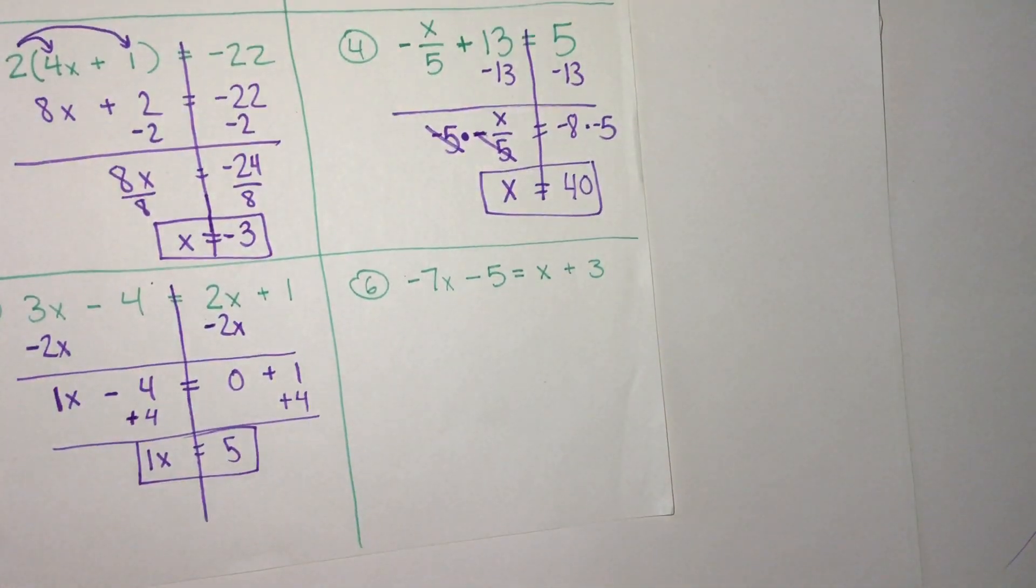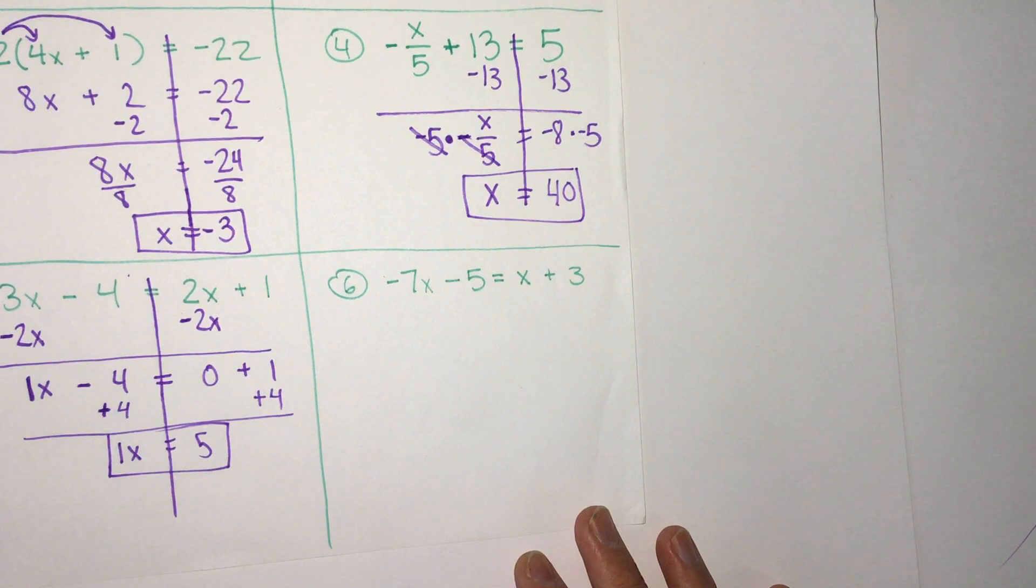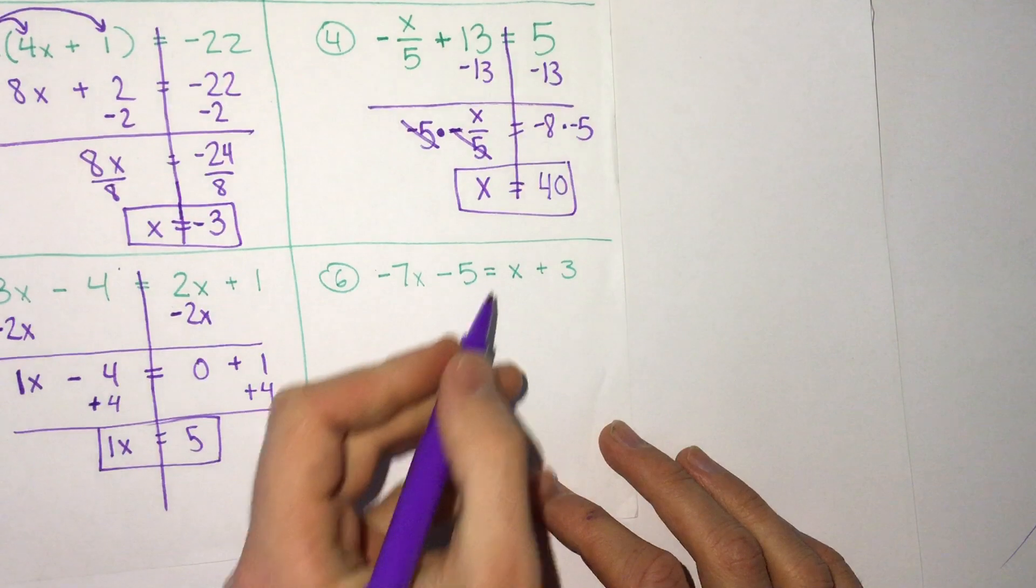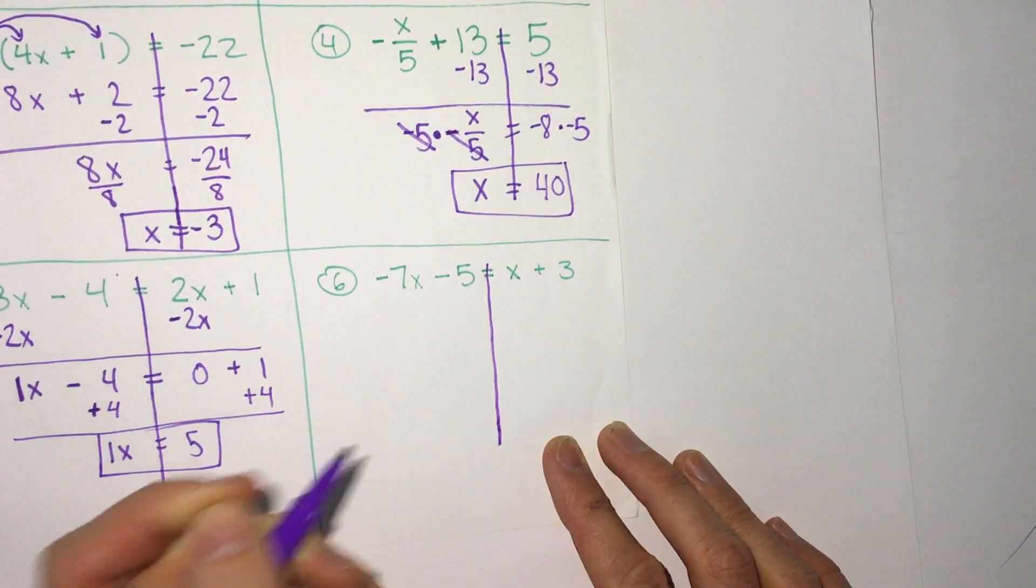So take a look at this number 6 problem and pause the video. See if you can do this one on your own. And when you're done, unpause the video to see the answer. Okay, hopefully you've gotten to try this. 7x minus 5 equals x plus 3.